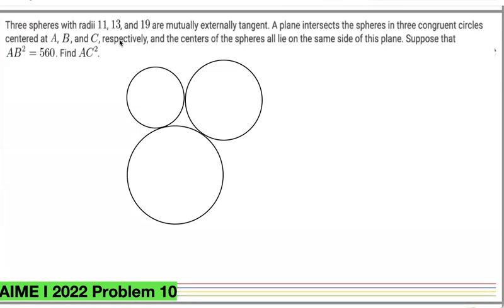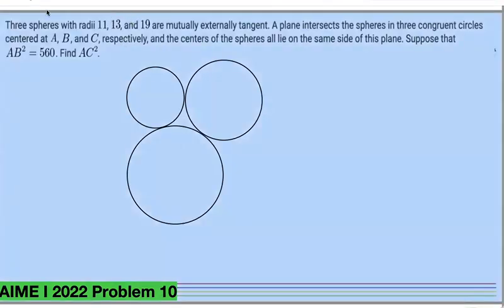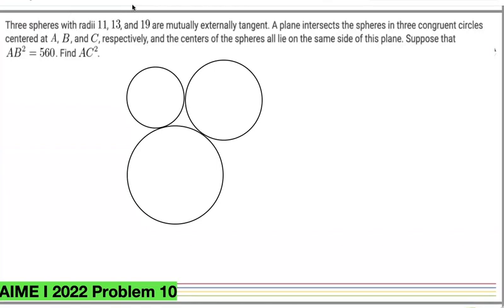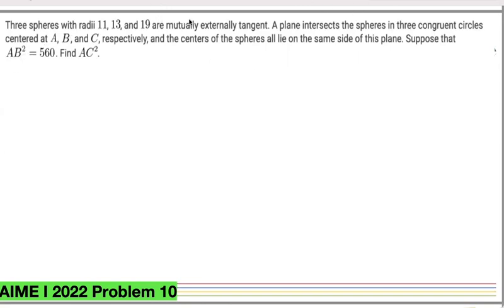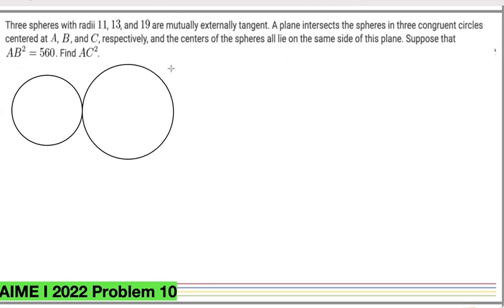This looks a little difficult. What's hard to imagine is how to figure out what the plane is even doing. Let's focus on just two spheres — the spheres with radius 11 and 13, since the circle in the sphere of radius 11 is centered at A, and the sphere of radius 13 contains the circle centered at B. We need to focus on these to find AB².